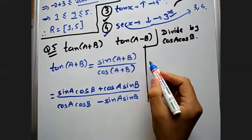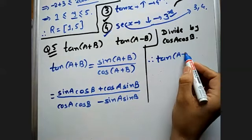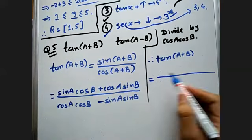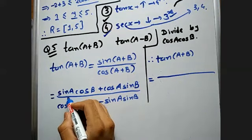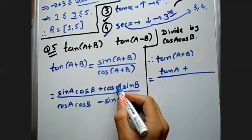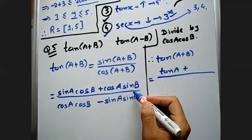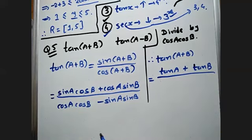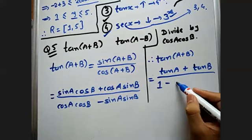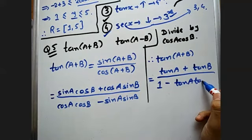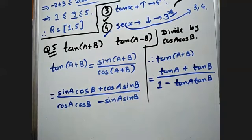So tan(A+B) becomes: sin A cos B divided by cos A cos B — here cos B cancels and sin A by cos A becomes tan A — plus cos A sin B divided by cos A cos B — cos A cancels, sin B by cos B becomes tan B. In the denominator, cos A cos B cancels to give 1, minus sin A sin B divided by cos A cos B gives tan A tan B. So tan(A+B) = (tan A + tan B) / (1 - tan A tan B).